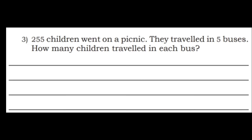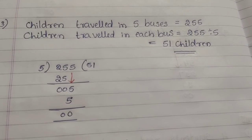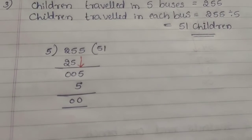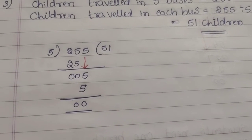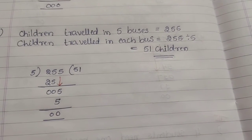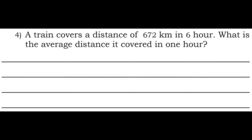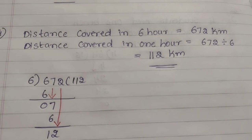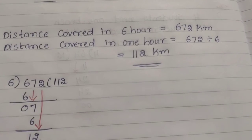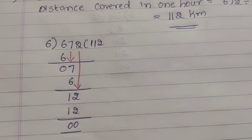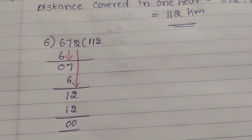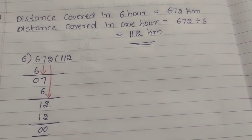Third question: 255 children went on a picnic and travelled in 5 buses. How many children travelled in each bus? Children in each bus is 255 divided by 5. 5 fives are 25; 25 minus 25 is 0. Bring down 5. 5 ones are 5; 5 minus 5 is 0. Total 51 children travelled in each bus. Fourth question: a train covers a distance of 672 kilometers in 6 hours. Distance covered in 1 hour is 672 divided by 6. 6 ones are 6; 6 minus 6 is 0. Bring down 7. 6 twos are 12; 12 minus 12 is 0. Total 112 kilometers.